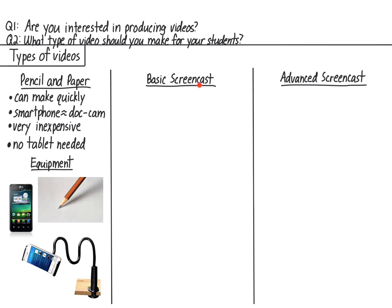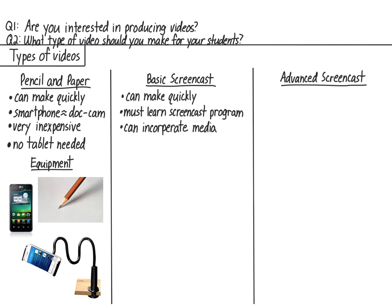Second is the basic screencast. These can also be made pretty fast, but require you to learn a screencasting program. One advantage of this is that it allows you to incorporate media like images, other videos, and even a webpage browser into your video. For example, if you have electronic images from the textbook you're using, you can insert them right into your screencast.